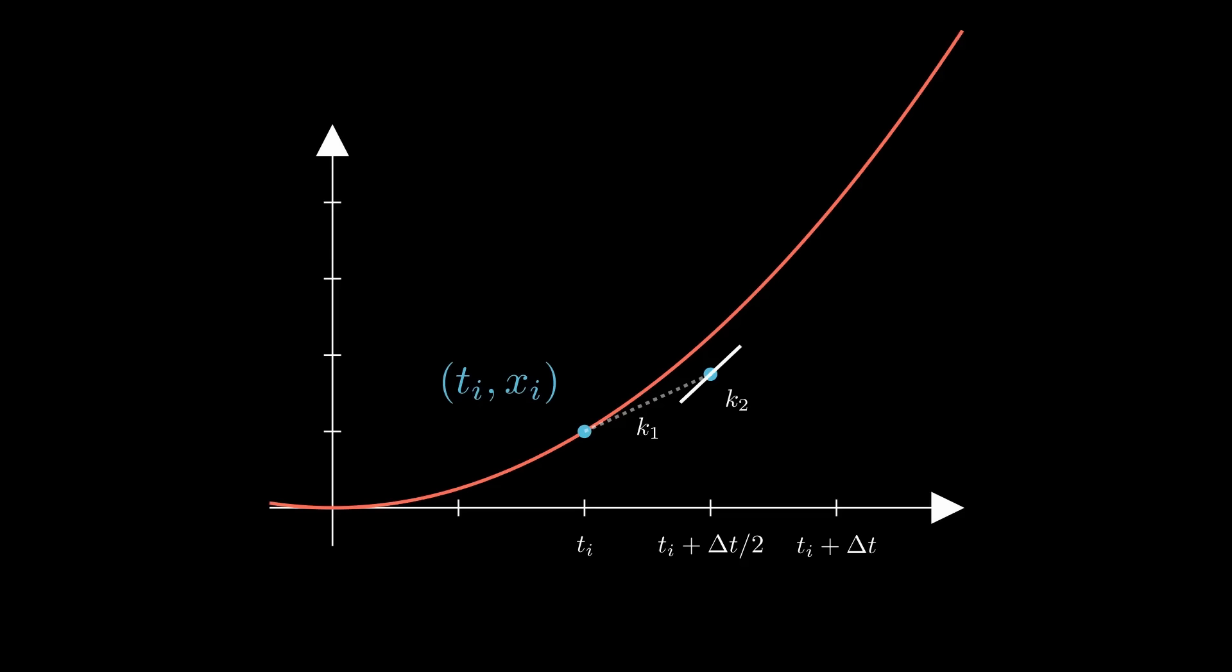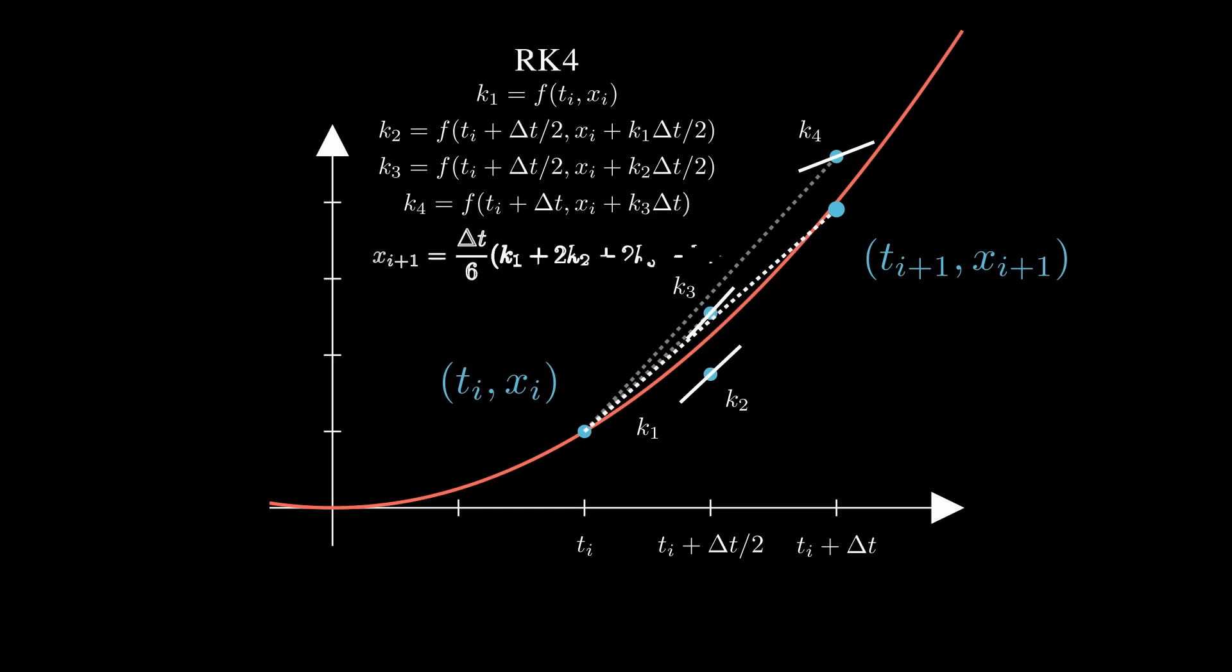Again, use that slope to find another point halfway in between, then find slope k₃. Finally, move the full time step using slope k₃, and at that point calculate k₄. We then average over these four slopes and add them to xᵢ times Δt. Here are all the full algebraic formulae.